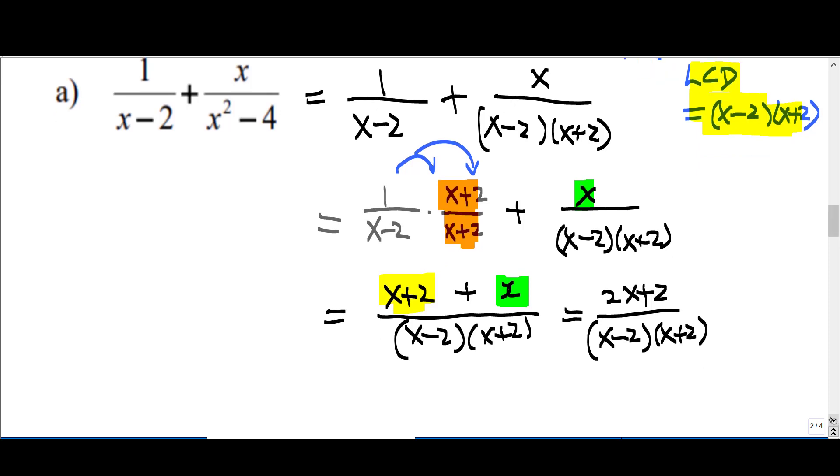Now can we simplify this? Notice that 2x plus 2 is actually 2 times x plus 1 over x minus 2 times x plus 2. So eventually, this is what you get for the answer for part A. We cannot simplify anymore.